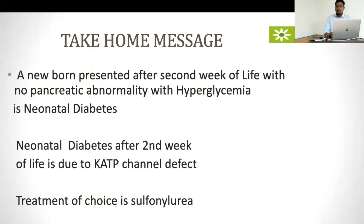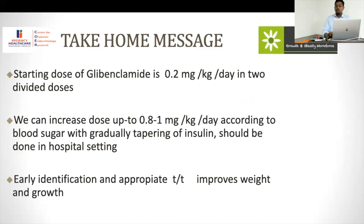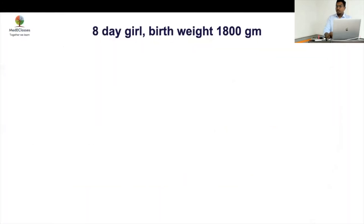At five-month follow-up, HbA1c and C-peptide were both normal. Take-home message: a newborn presenting after the second week of life with hyperglycemia and no pancreatic abnormality has neonatal diabetes. Onset after the second week is likely due to potassium ATP-ase channel defect; treatment of choice is sulfonylurea. Starting dose of glibenclamide is 0.2 mg/kg/day in two divided doses, increasing to 0.8–1 mg/kg/day. Insulin should be tapered gradually in hospital; early identification improves weight and growth.